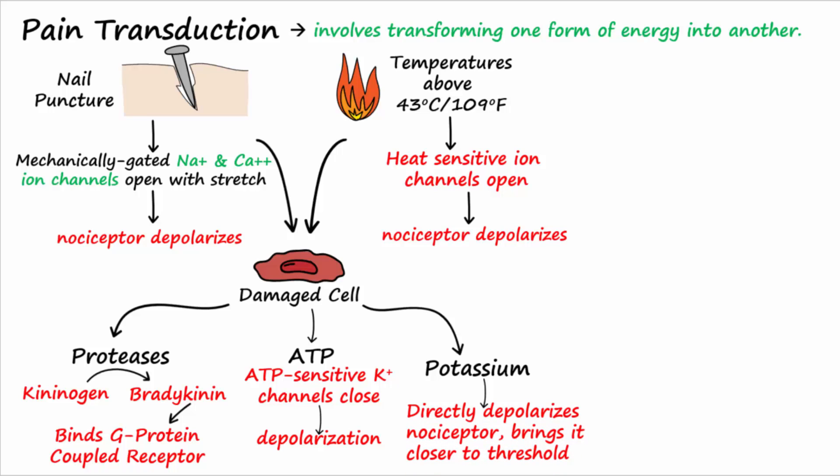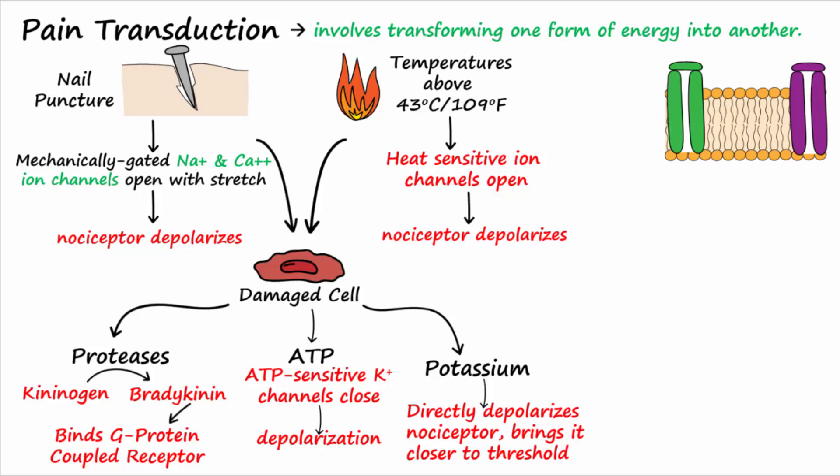Lactic acid buildup in the extracellular fluid of hard-working muscles will acutely increase hydrogen ion concentration in the extracellular fluid surrounding nociceptors. These ions activate acid-sensing ion channels (ASICs), which open and increase permeability of the nociceptor to sodium and/or calcium ions, depolarizing the nociceptor.